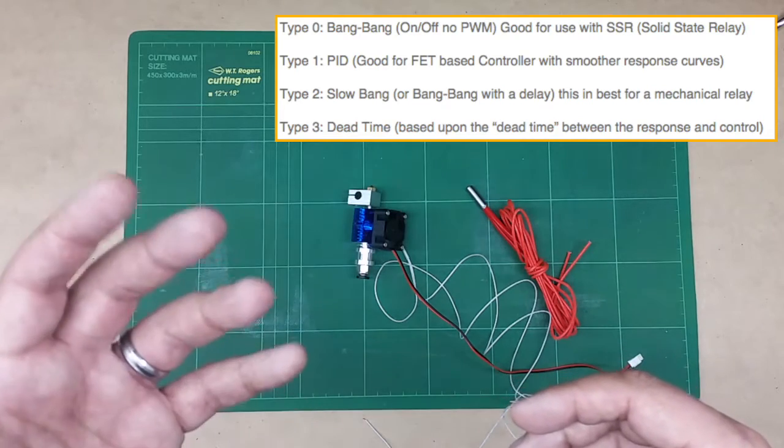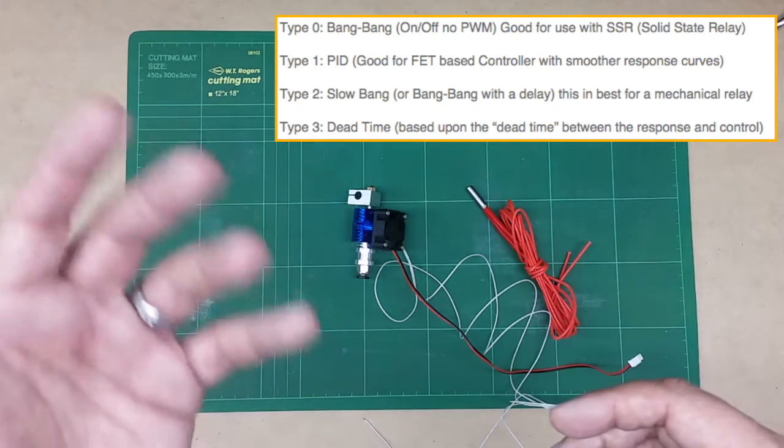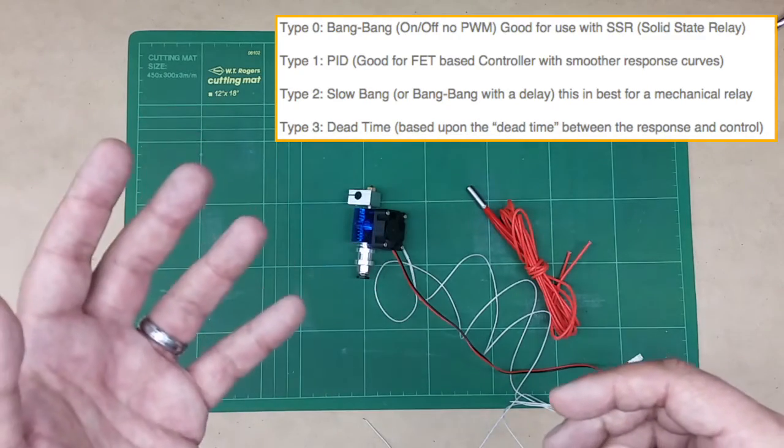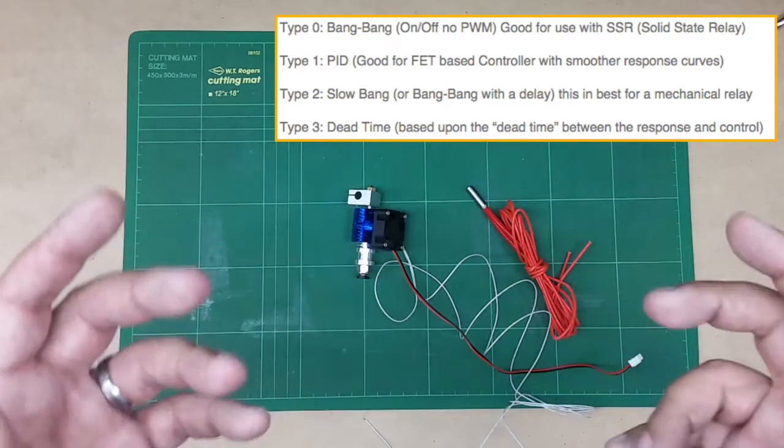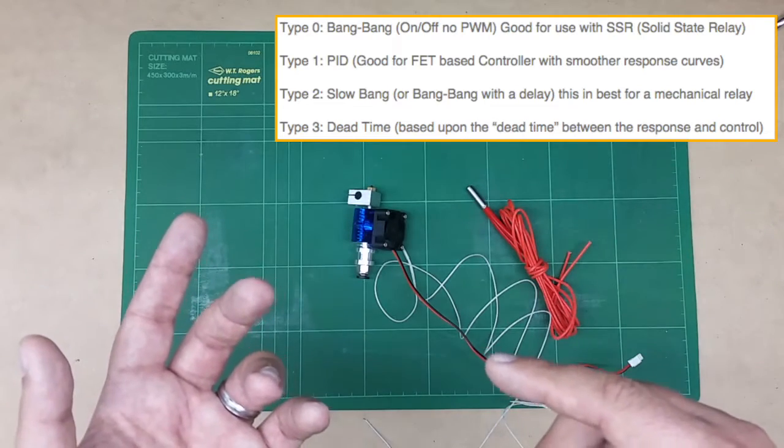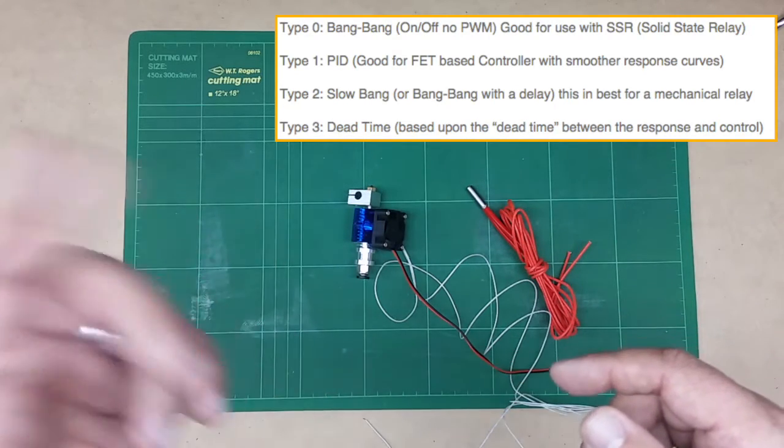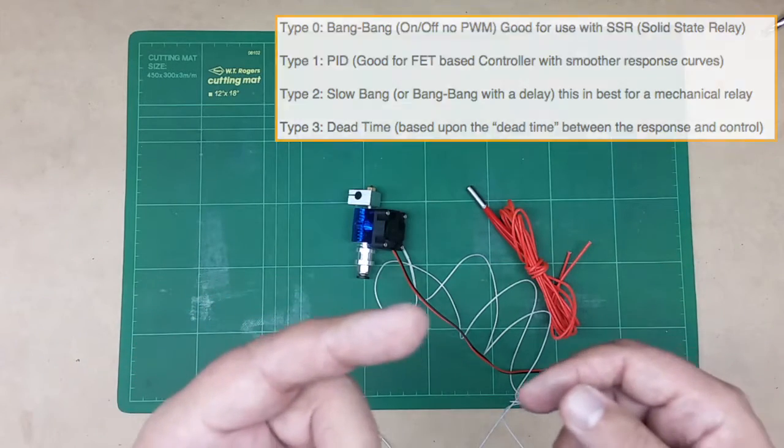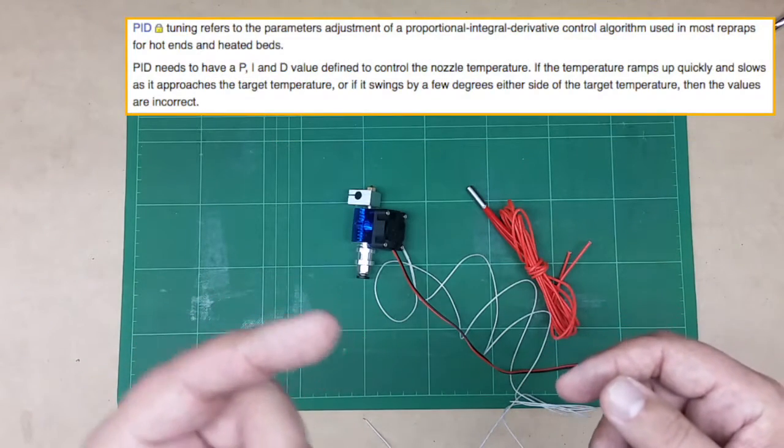And with bang-bang, you'd either need like a FET or an SSR, solid state relay to do the changing. But for us, what we're going to focus is on the other two. So we're going to focus on dead time, which is usually the standard, or PID, which PID is proportional integral derivative.